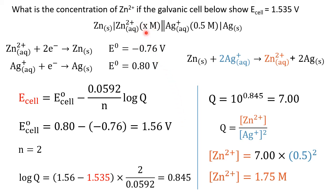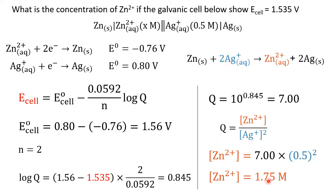To summarize the approach when asked to find concentration: from the Nernst equation, you are given E_cell; find E°_cell from the anode and cathode reduction potentials — the left side of cell notation is anode, right side is cathode. Calculate E°_cell, identify n, then calculate log Q, then Q. Q is the reaction quotient: concentration of products divided by concentration of reactants, remembering to apply the correct mole powers. Rearrange to get the unknown concentration.